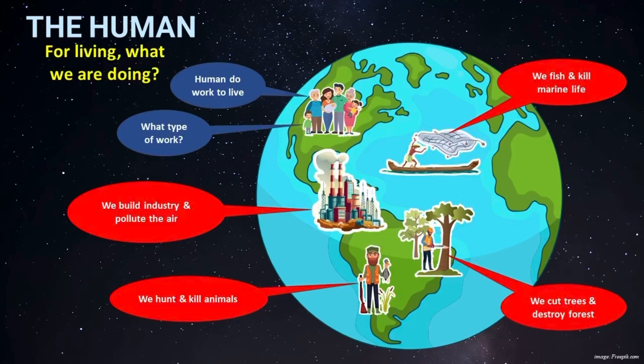In this video we will focus on humans, because humans are the only living species causing damage to the Earth — not animals or plants. For living, humans do work, but what type of work? We hunt and kill animals and wildlife for their meat and parts. We do fishing activities to catch fish but at the same time destroy other marine species. We cut trees through deforestation to expand our cities, agricultural land, livestock farming, and homes. We build more industries and factories, polluting the air, water, and land.